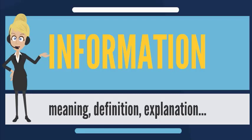Information is conveyed either as the content of a message or through direct or indirect observation of something. That which is perceived can be construed as a message in its own right, and in that sense, information is always conveyed as the content of a message.